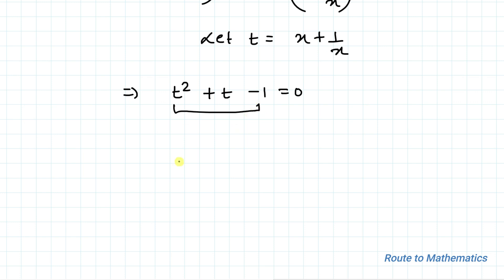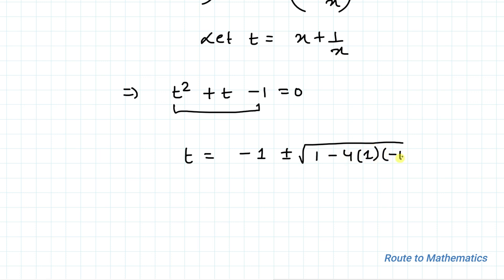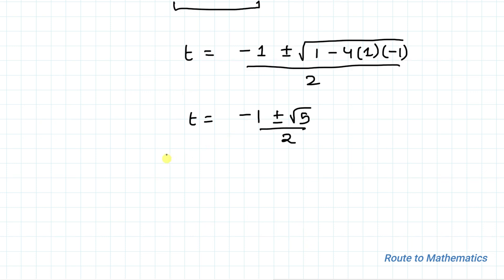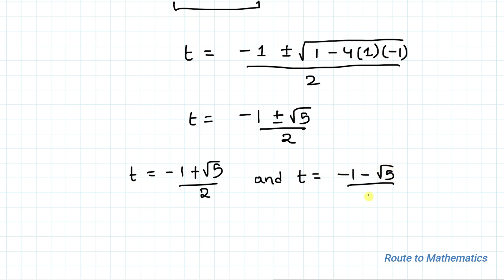Here we are getting a quadratic equation. To find the value of t we apply the quadratic formula: t equals minus 1 plus or minus root 5, divided by 2. So we get two values: t equals minus 1 plus root 5 by 2, and t equals minus 1 minus root 5 by 2.